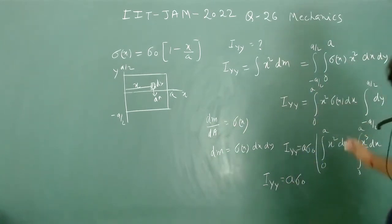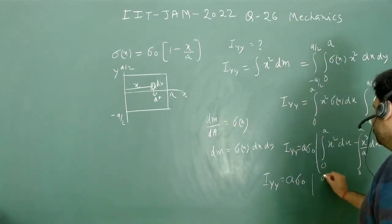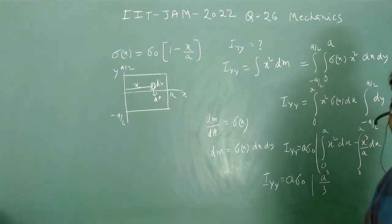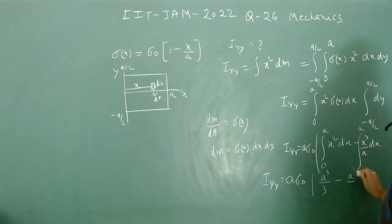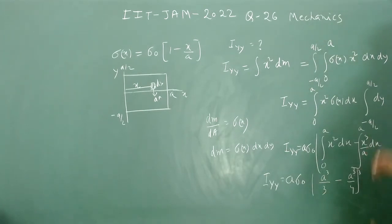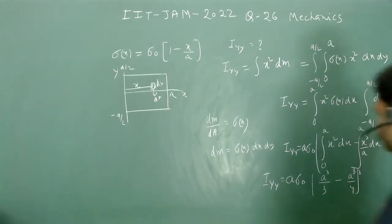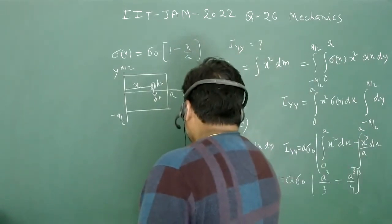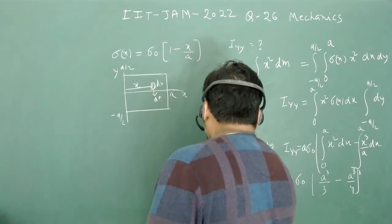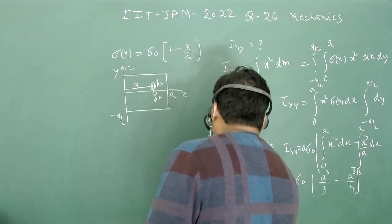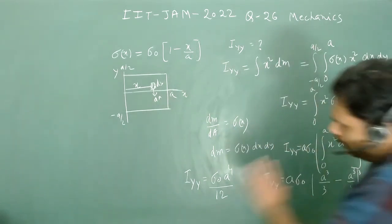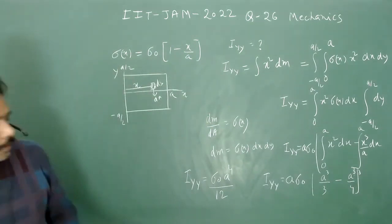Evaluating the integrals, I_yy = a·σ₀·(a³/3 - a⁴/(4a)) = a·σ₀·(a³/3 - a³/4). One factor of a cancels, giving I_yy = σ₀·(a⁴/3 - a⁴/4) = σ₀·a⁴/12. This is not the final answer yet, because we need to express it in terms of the total mass M.